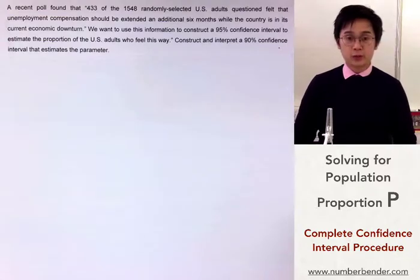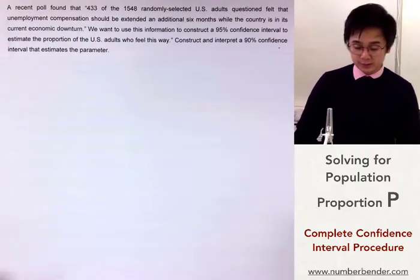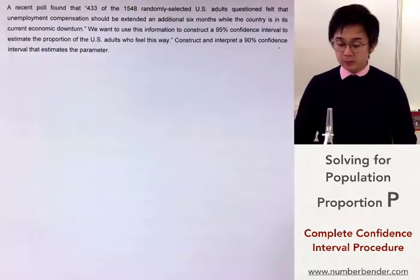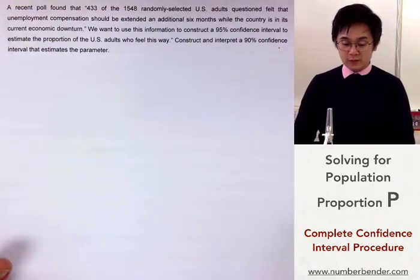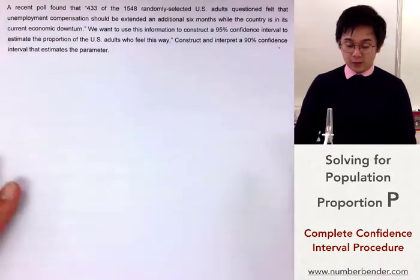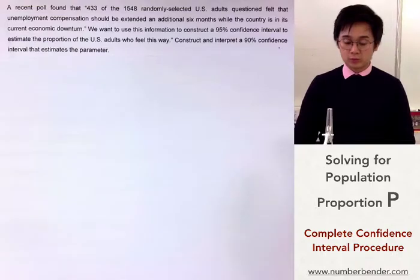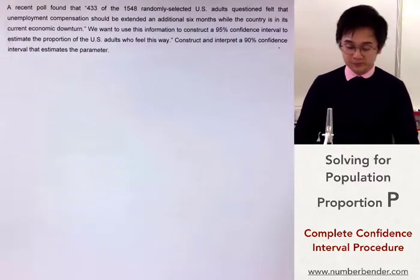Let's start with finding the parameter of interest. In this particular confidence interval problem, we are given that 433 of the 1,548 randomly selected U.S. adults who were questioned felt that unemployment compensation should be extended an additional six months while the country is in its economic downturn. We want to use this information to construct a 95% confidence interval. Our population of interest is the true proportion of U.S. adults who feel that unemployment compensation should be expanded an additional six months.